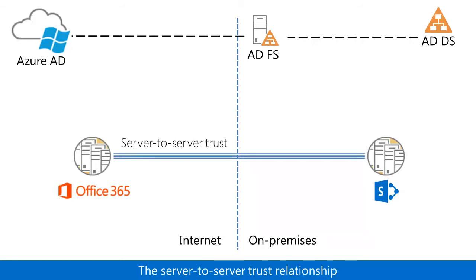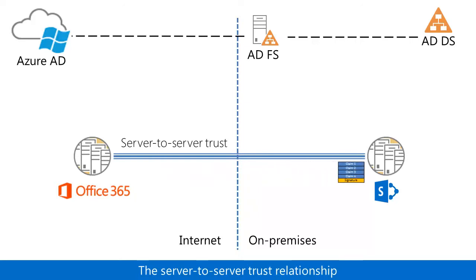Requests for cross-farm resources are in the form of claims-based security tokens. With the server-to-server trust relationship in place, the on-premises SharePoint farm can trust security tokens sent from the online SharePoint farm. Similarly, the online farm can trust security tokens sent from the on-premises farm.